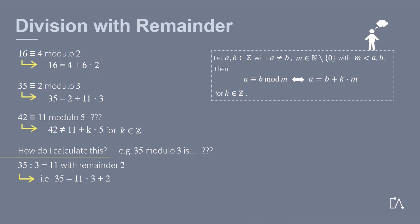Hence, we can write 35 as 11 times 3 with remainder 2, and therefore 35 equals 2 modulo 3. The division with remainder gives us our result as the remainder.